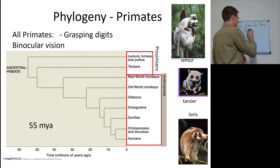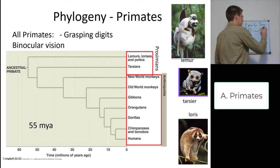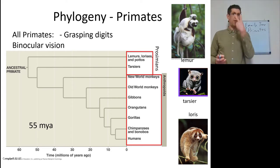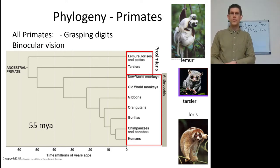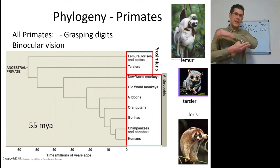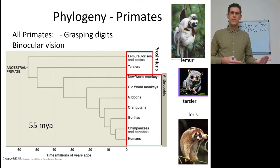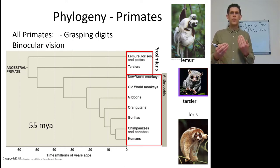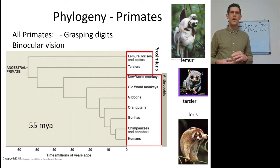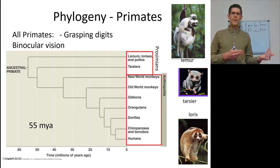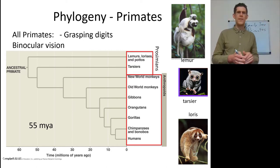Let's look at what the primates are. First and foremost, all primates have grasping digits and binocular vision. This combines things like tarsiers, lorises, and lemurs with everything else. The loris is actually poisonous — it has glands in its elbow used for poison. The tarsier is nocturnal. Lemurs can leap from tree to tree very easily and bound along the ground. These are the prosimians — lemurs, lorises, galagos, tarsiers — the more ancestral primates, separated from us by about 55 million years of evolution.